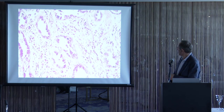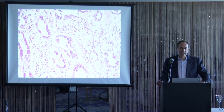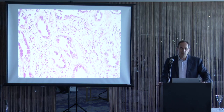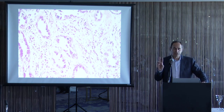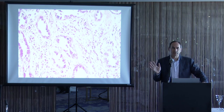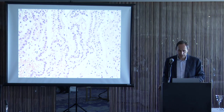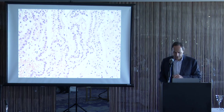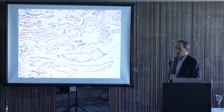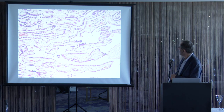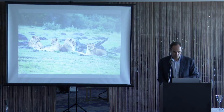Clear cell adenocarcinoma mimicking nephrogenic adenoma shows a mitotic figure — nephrogenic adenoma is one of the rare conditions where you virtually never see mitotic figures. If you see a mitotic figure in something you think is nephrogenic adenoma, there is a 99% chance you are wrong and it's likely malignant. A papillary pattern of clear cell adenocarcinoma can also mimic nephrogenic adenoma, but hyperchromatic nuclei distinguish it.